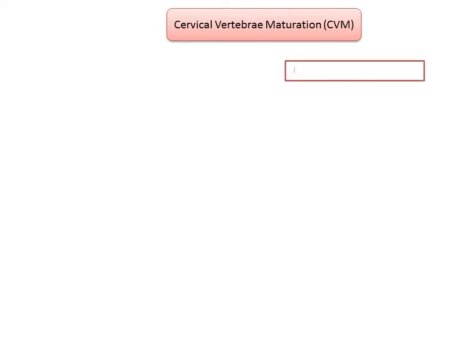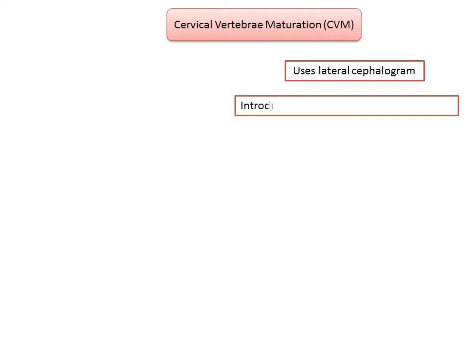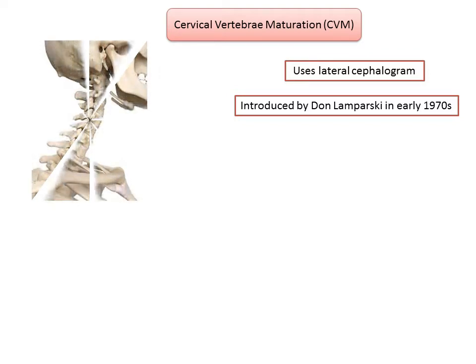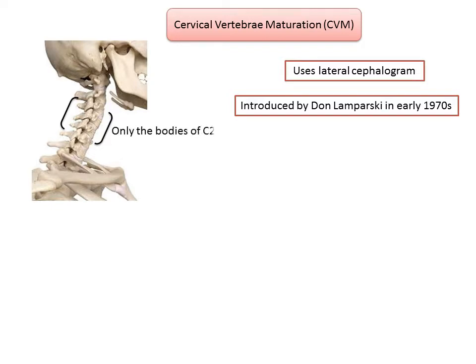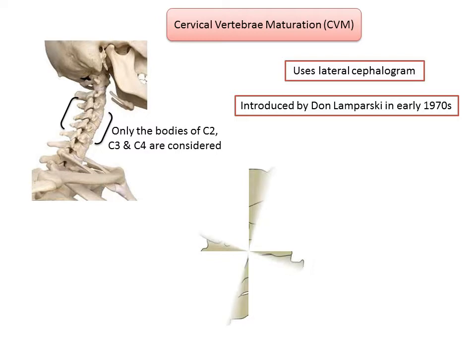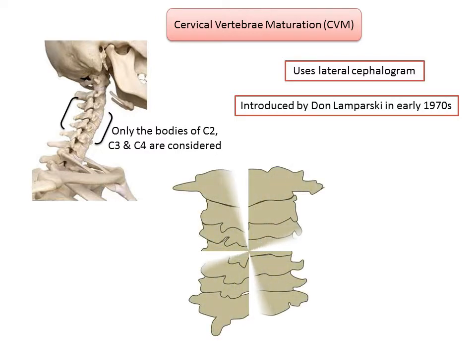The cervical vertebrae are available on the lateral cephalogram that is used routinely for orthodontic diagnosis and treatment planning. This method has been available since the early 1970s, when it was developed by Don Lamparski as part of his Master of Science thesis at the University of Pittsburgh. The cervical vertebral maturation method involves six stages of cervical maturation using the lateral head film, and only the bodies of the second, third, and fourth cervical vertebrae — C2, C3, and C4 — are considered.